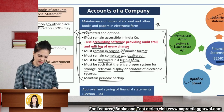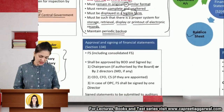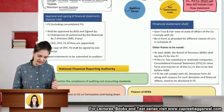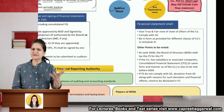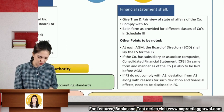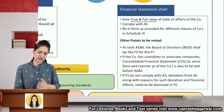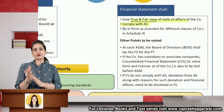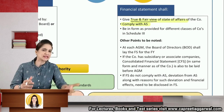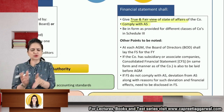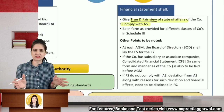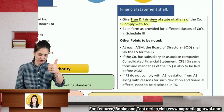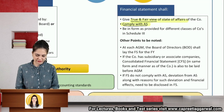Approval and signing of financial statements: financial statements should give a true and fair view of the state of affairs of the company and should comply with accounting standards. True and fair view means all material and important information is provided, it is complete in all respects, and all accounting standards are followed. Financial statements should be in the format prescribed for different classes of companies in Schedule 3, which gives the format for preparing profit and loss account and balance sheet.